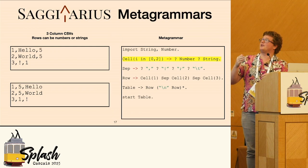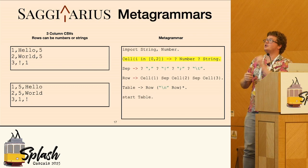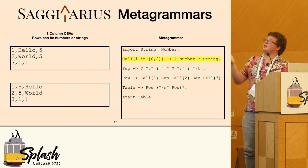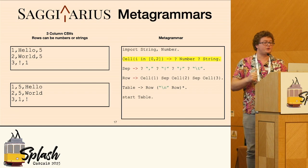So I could have in this metagrammer, cell going to nothing — I could choose to not include both productions. I could include just number or just string, and I could have a production for both number and string. Now in a CSV, I want to really have kind of well-defined data types, so I'm going to say that each cell can either step to a number or a string.